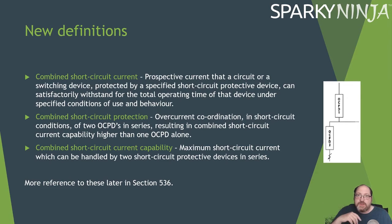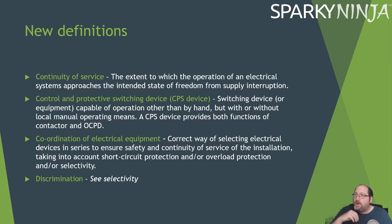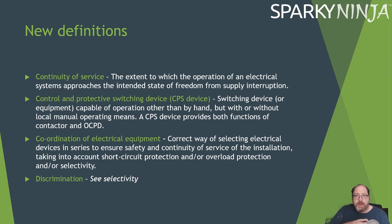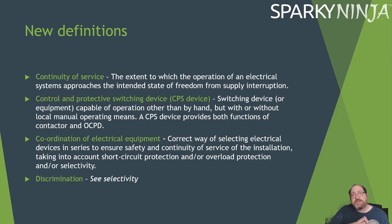We now have continuity of service, which relates to safety services with classifications such as no break, immediate break, and long break. It's defined as the extent to which the operation of an electrical system approaches the intended state of freedom from a supply interruption. We also have the CPS device — a control and protective switching device — which is capable of operation other than by hand, with or without local manual operating means, and provides both the functions of a contactor and an OCPD.